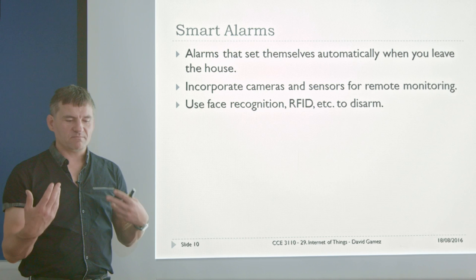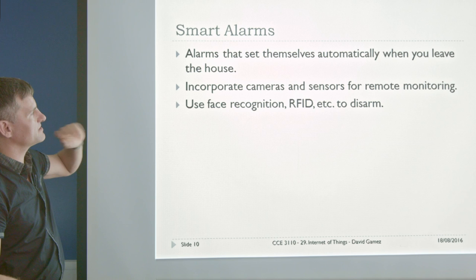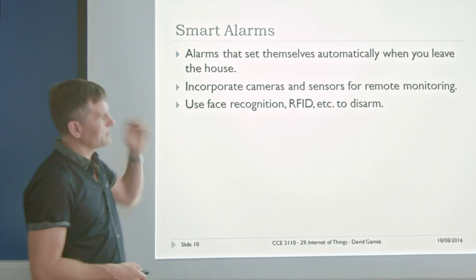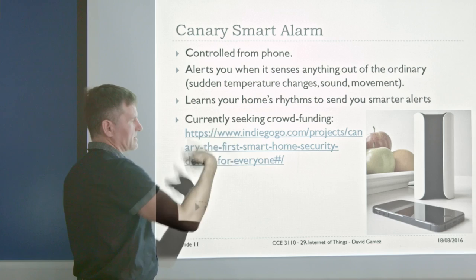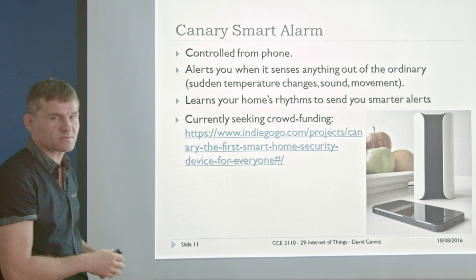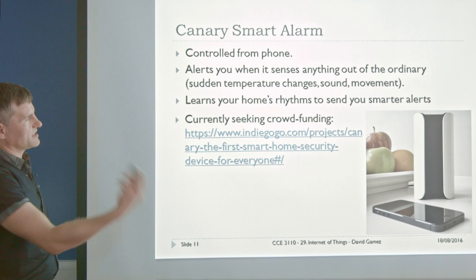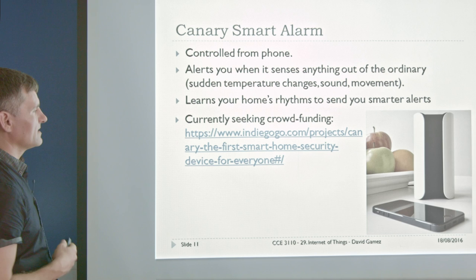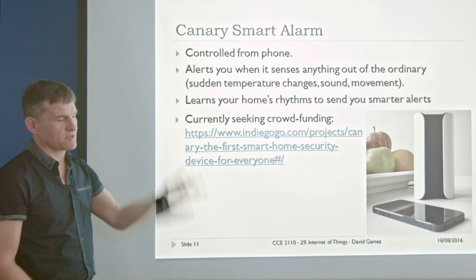Smart alarms are devices that monitor your patterns of activity in the home — they can tell by listening and looking whether people are around and whether it recognises those people using face recognition and voice recognition. You could incorporate lots of different sensors and use a chip in your arm or face recognition to disarm them. This kind of smart alarm device has an HD camera, microphones, and movement sensors. It learns your patterns and will alert you when those patterns deviate from normal. It's probably really annoying to start with, but over time it'll learn.